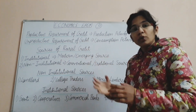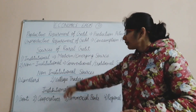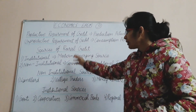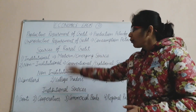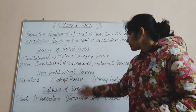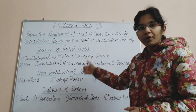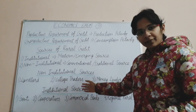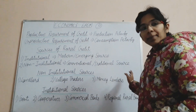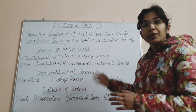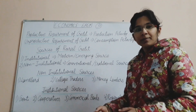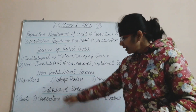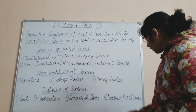The sources of rural credit are basically of two types: first, institutional sources, and second, non-institutional sources. Institutional sources are modern and emerging sources of credit. Non-institutional sources are conventional and traditional. Non-institutional sources include landlords, village traders, and money lenders. In the first five-year plans, 93% of credit came from non-institutional sources. From 1981 onwards, credit is mainly from institutional sources such as government, cooperatives, commercial banks, and regional rural banks.